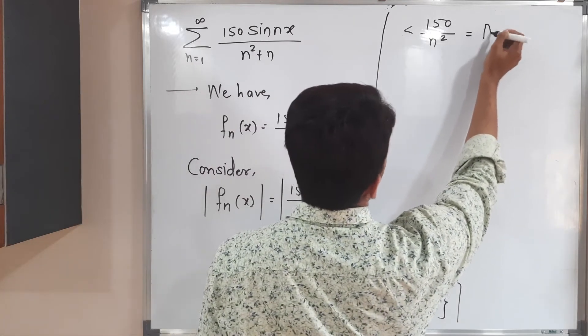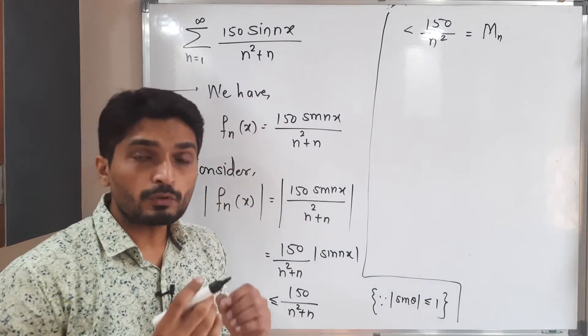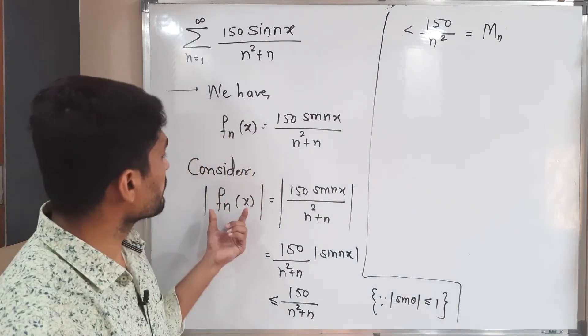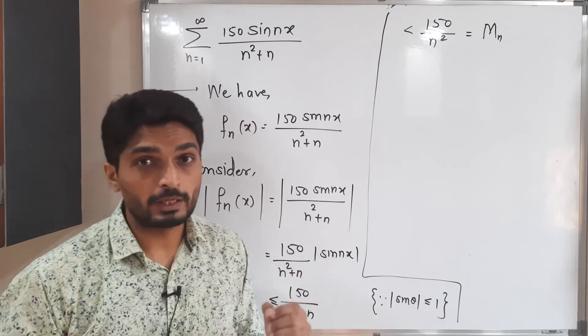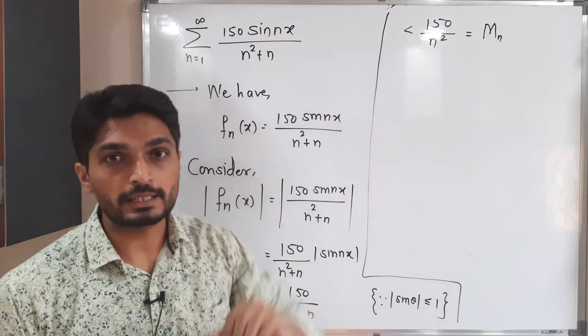So that means this is our M_n. If you remember Weierstrass M-test, we always try to prove mod f_n of x is less than or equal to some term of a sequence. So we got that thing here. So I am calling it as M_n.